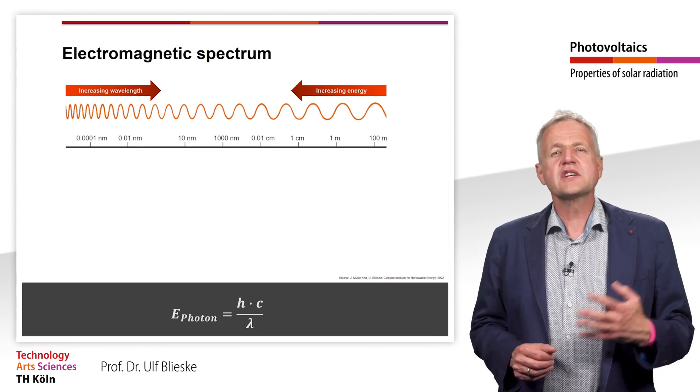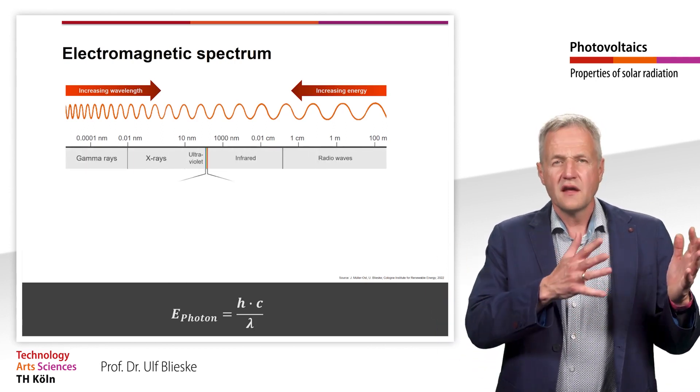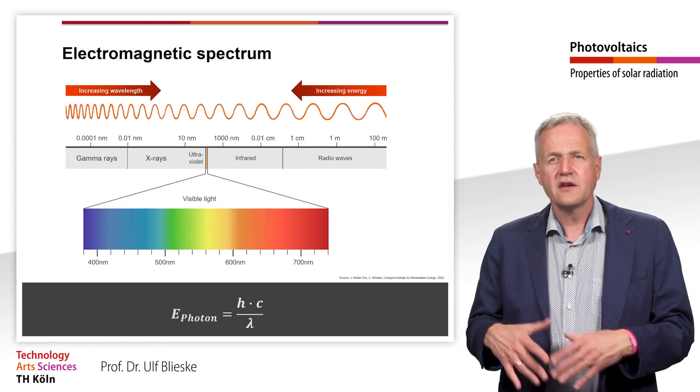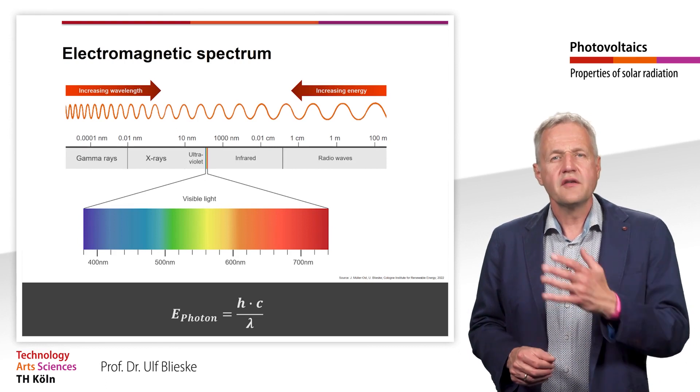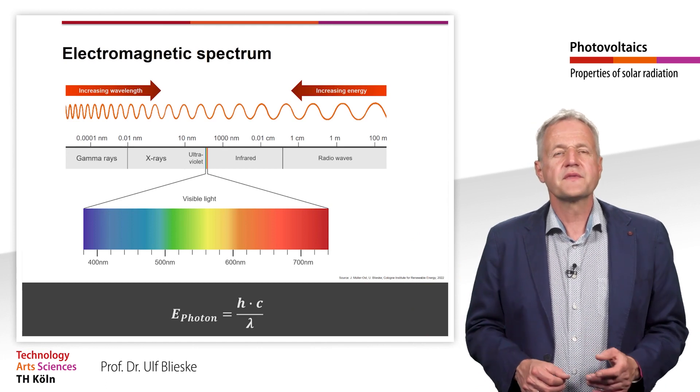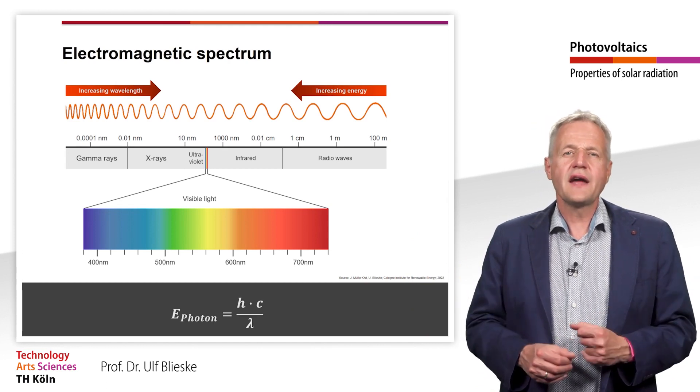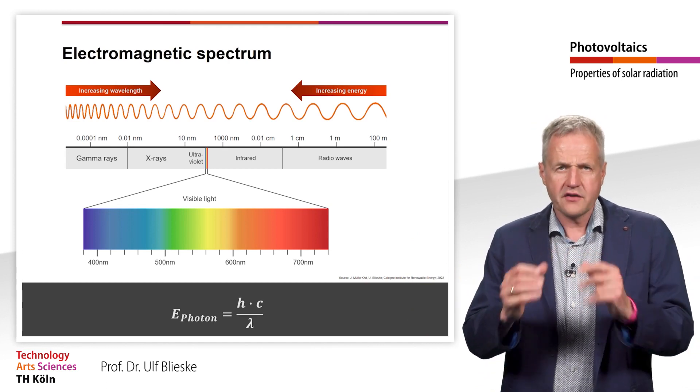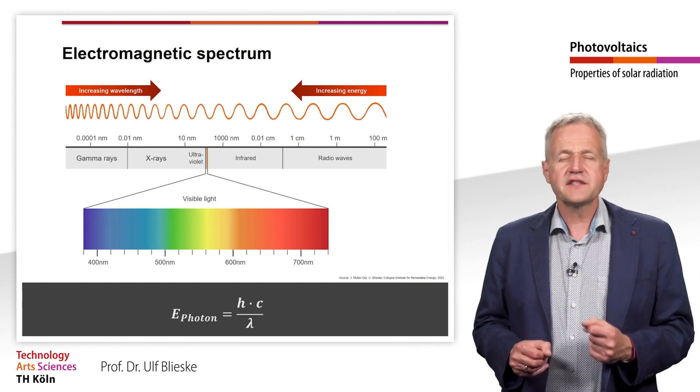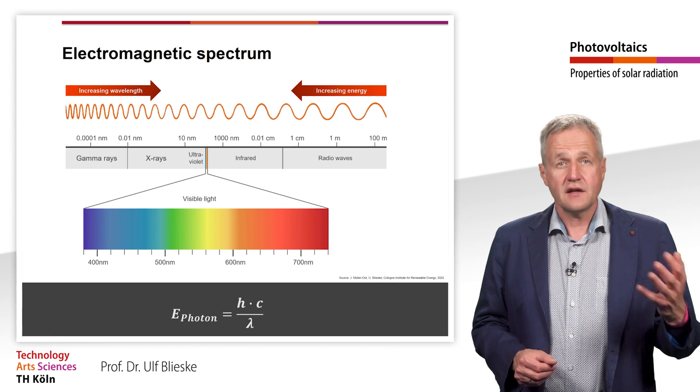Ordered by increasing wavelengths, the electromagnetic spectrum includes gamma radiation, X-ray, UV radiation, visible light, infrared radiation and finally radio waves. The visible light is only a very small part of the electromagnetic spectrum and extends from about 380 to 780 nanometer.